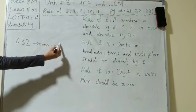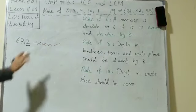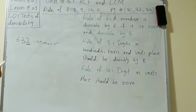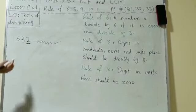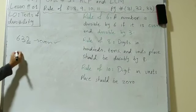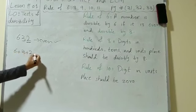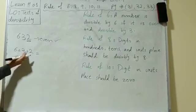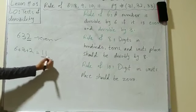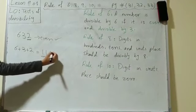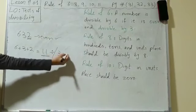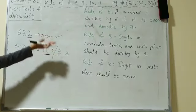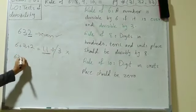The first condition for the rule of 6 is fulfilled. Now we check the second condition: divisibility by 3. You add the digits of the number and check if the sum is divisible by 3. So 6 plus 3 is 9, plus 2 is 11. Since 11 is not divisible by 3, the second condition is not fulfilled, so 632 is not divisible by 6.